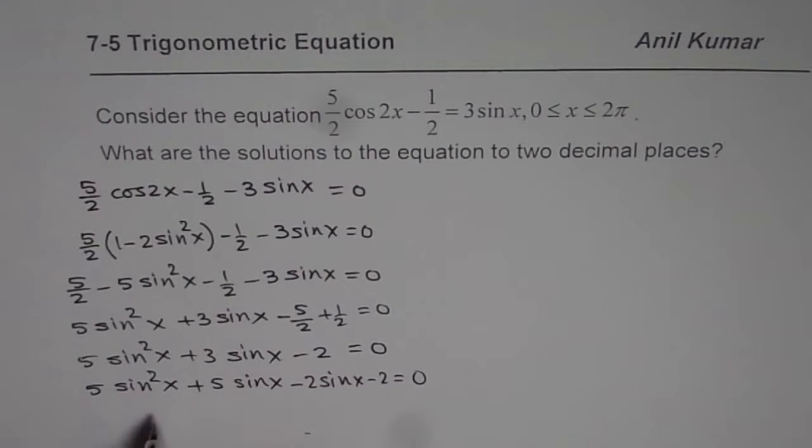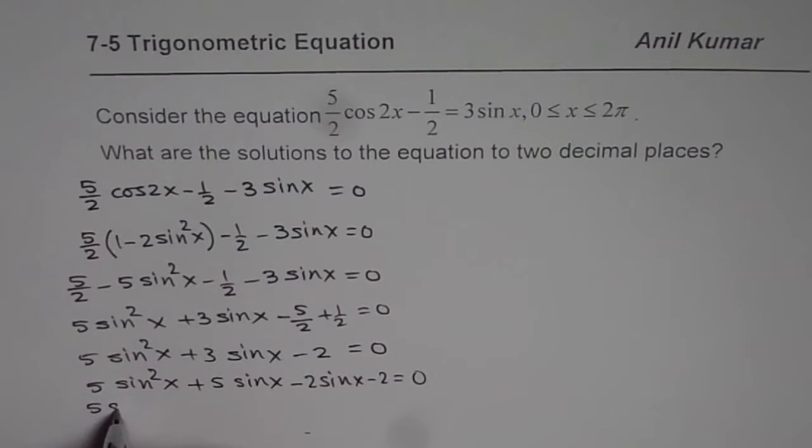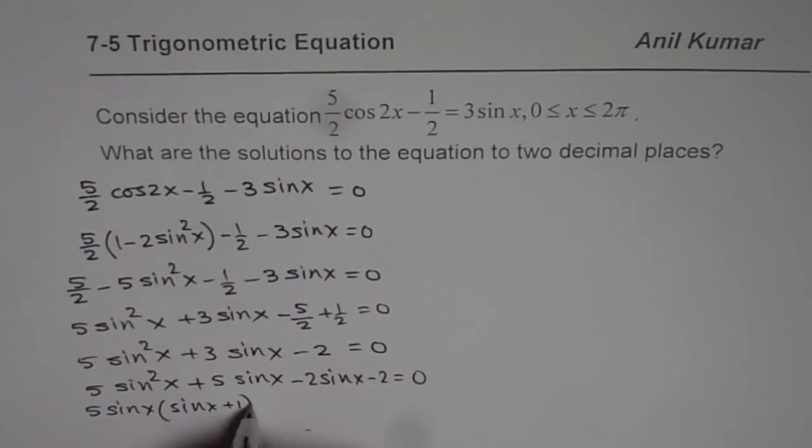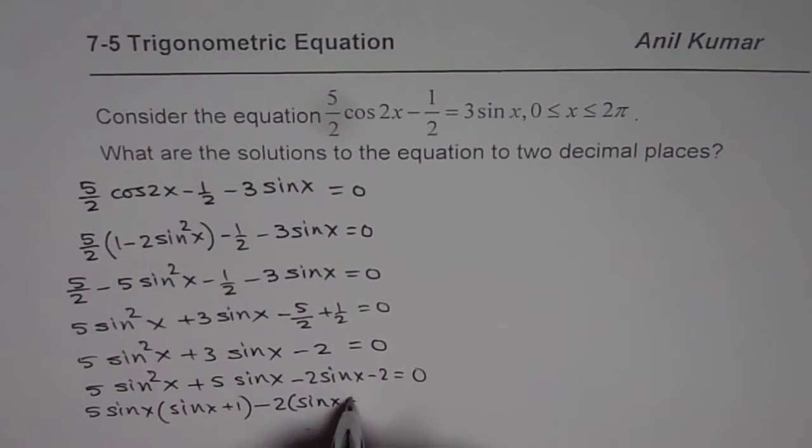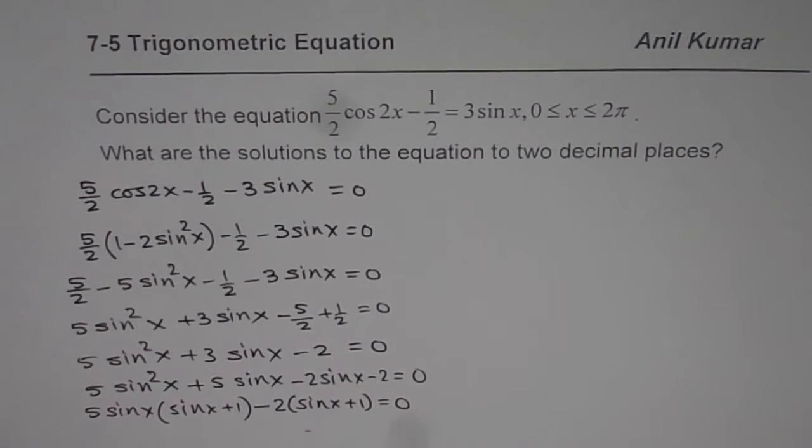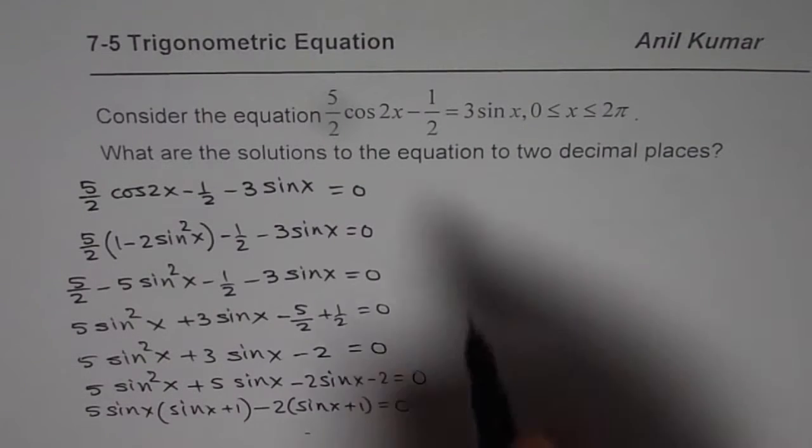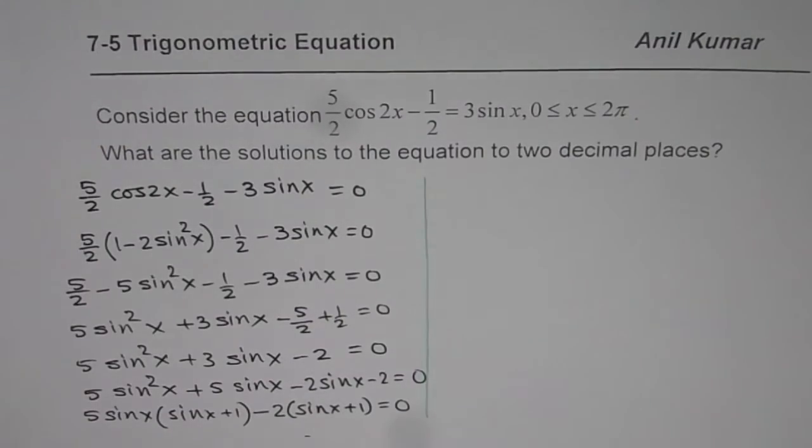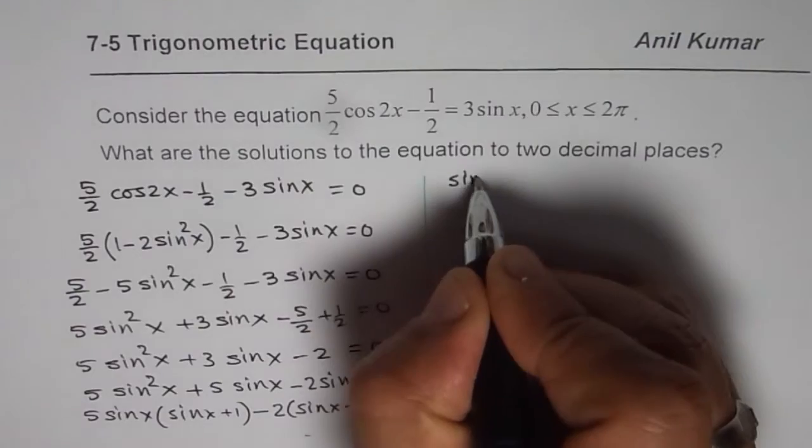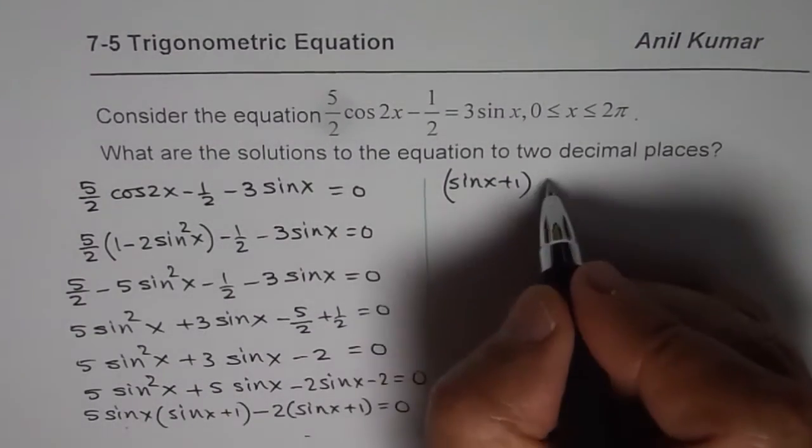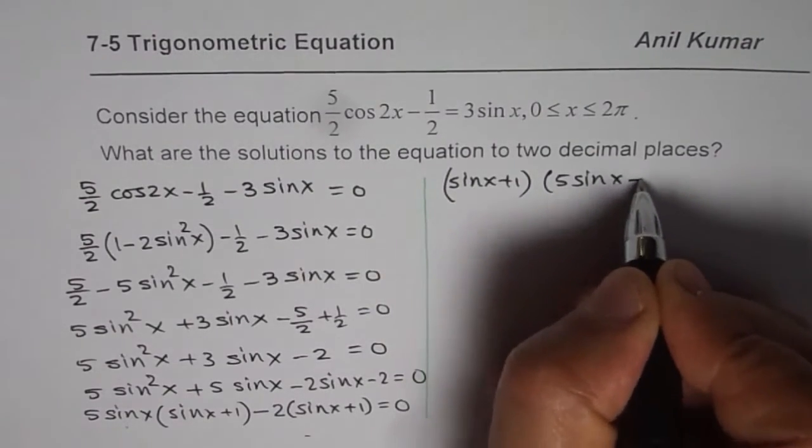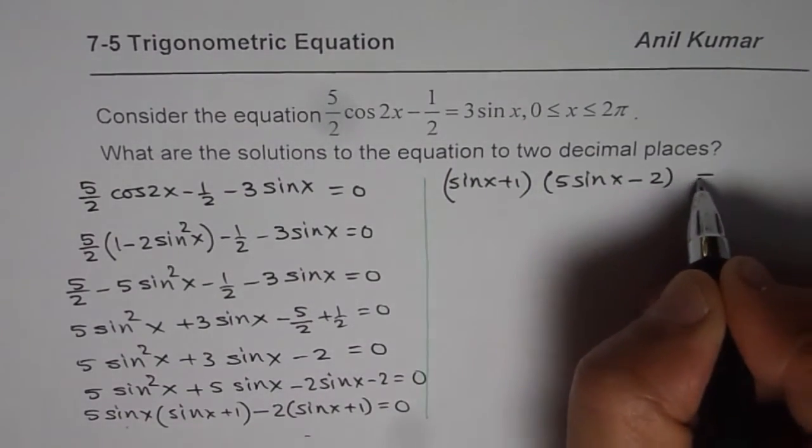We can factor this by taking 5sin(x) common and we get sin(x) + 1. Here we can take -2 common, sin(x) + 1 equals 0. So that gives us factored form of this particular equation.